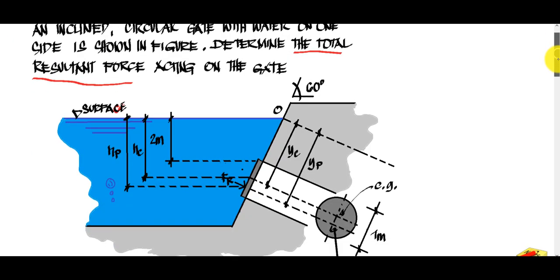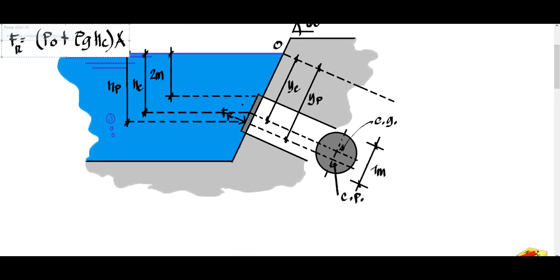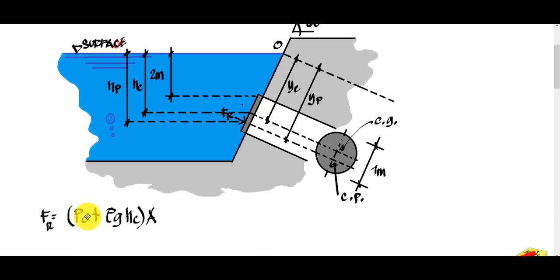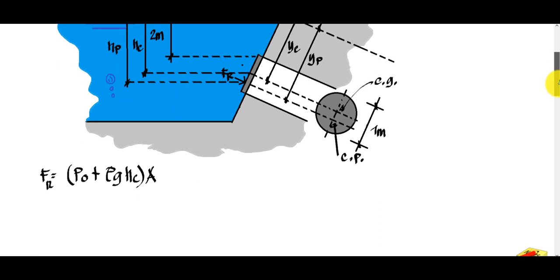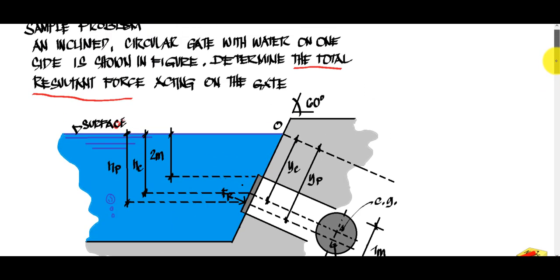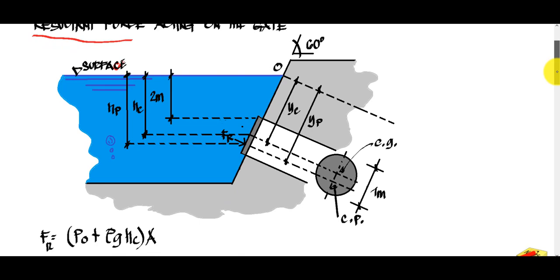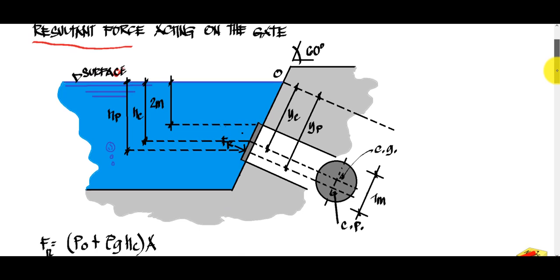We are now looking at the total resultant force. The equation is: FR equals atmospheric pressure plus density times gravity times hc, all multiplied by the surface area. In this problem, since it does not explicitly state the atmospheric pressure but the surface is exposed to atmosphere, we will include it.